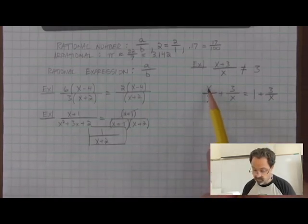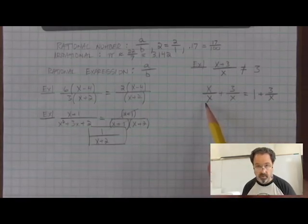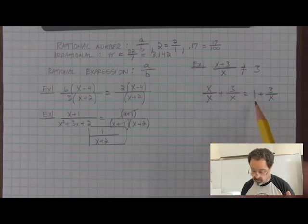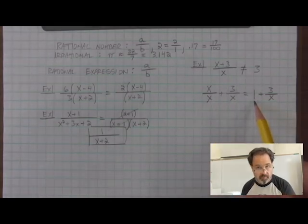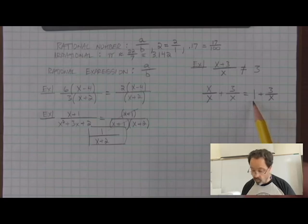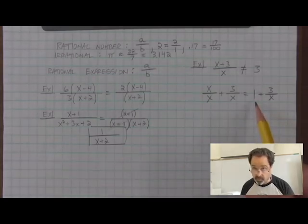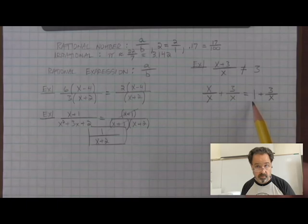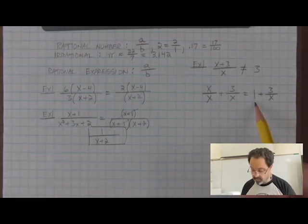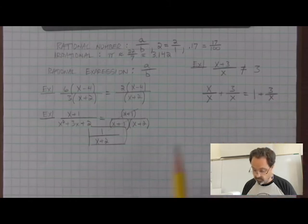Now in this case, turning this into a one kept it as a one and part of our answer. In this case, the one didn't disappear because we're not multiplying by one, which can be ignored. We're adding one. And we're not going to ignore the fact that we're adding one to three over x.